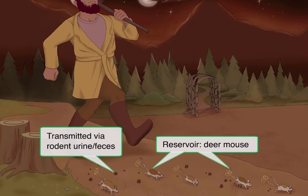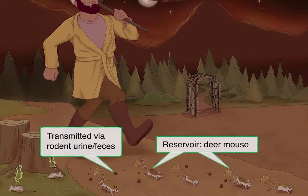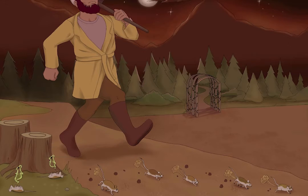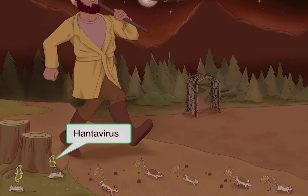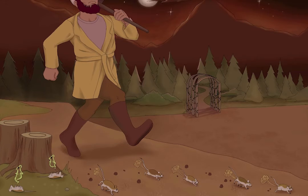To illustrate Hantavirus, we'll draw in deer mice scurrying away from Bunyan, leaving a cloud of urine and pellets of feces behind them. A couple of mice have died from this vicious virus on the left, and little ghosts are hovering above their lifeless bodies. Little does Paul know that these ghost mice will now haunt his dreams forever — get it? Haunt, for Hantavirus.